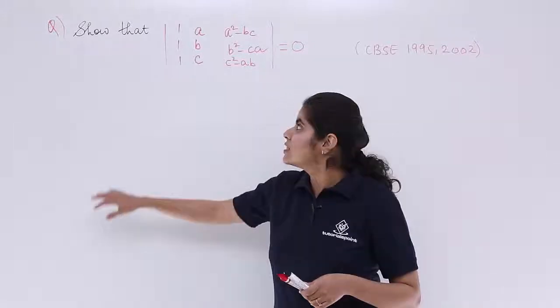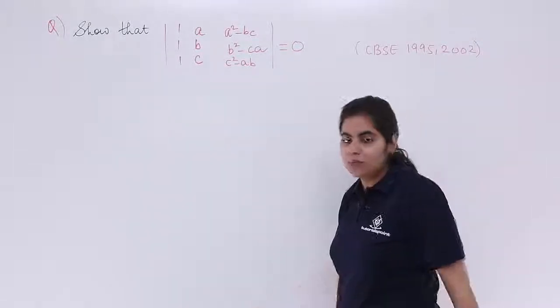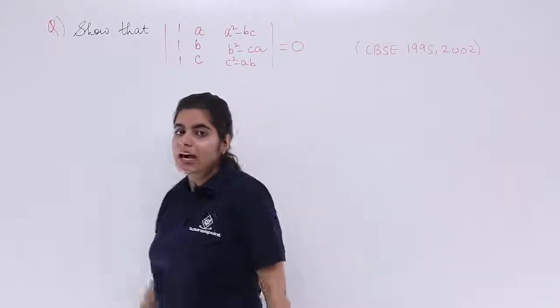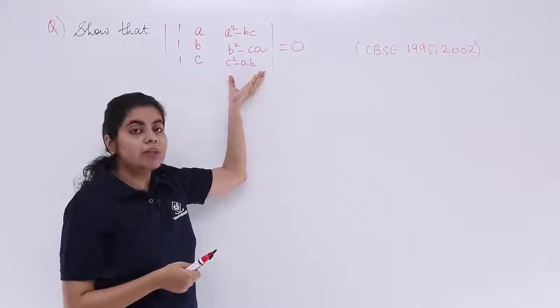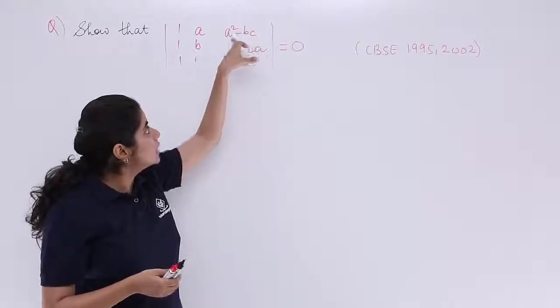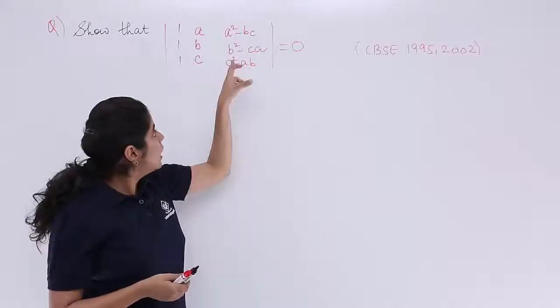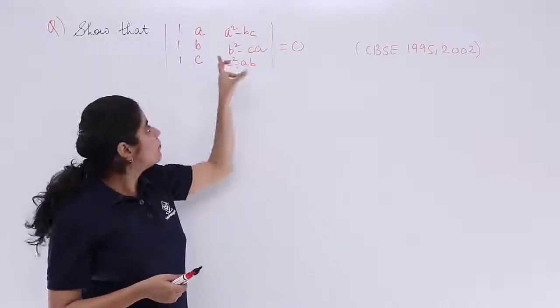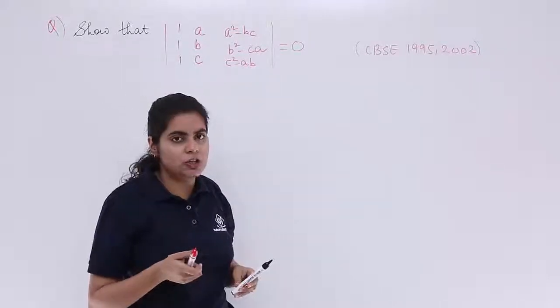Now, the question says, show that this determinant has the value equal to 0. And you can see that in this question we can use one very popular and important property. A square and B, C are having some operation in between them. That is an arithmetic operation. B square and C, A also have an operation. C square and A, B also have an operation.